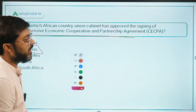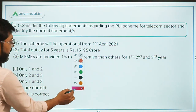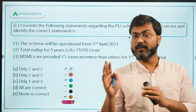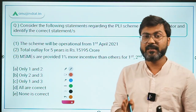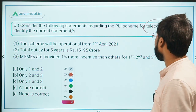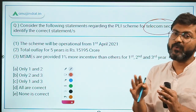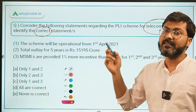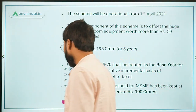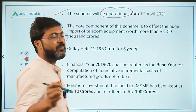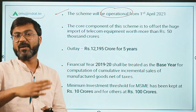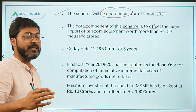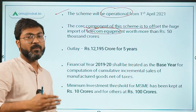This agreement is known as CECPA — Comprehensive Economic Cooperation and Partnership Agreement. Now, question three is very important: the PLI scheme for the telecom sector has been approved. The government had announced PLI schemes for 10 sectors, and now the telecom sector provisions have been released. This scheme will be operational from 1st April 2021, and its core component is to offset the huge import of telecom equipment.